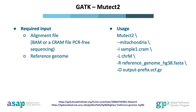The application of Mutect2 somatic variant calling is simple and straightforward. Alignment files in CRAM or BAM format and a reference genome in FASTA format are required inputs. We run Mutect2 on default settings, specifying the mitochondrial mode and chromosome M, and also providing a prefix for the output file in VCF format, similar to generating a standard VCF file. Further details regarding specific parameters are available in the link provided below.